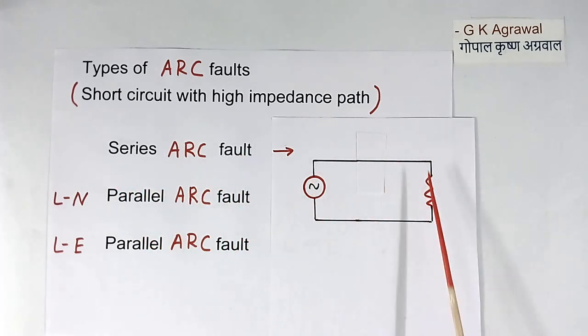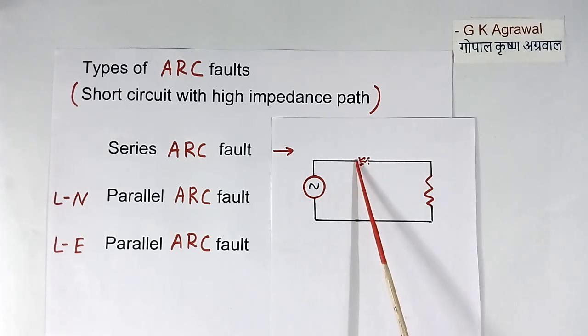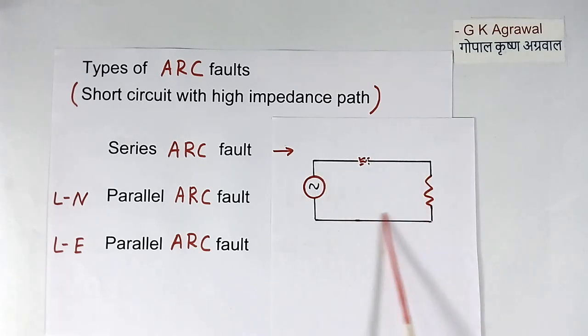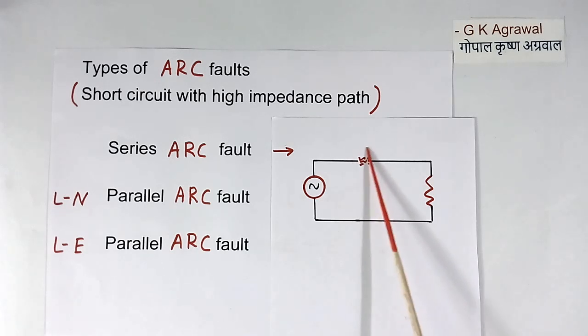This is simple circuit. This is load. Current is flowing, so no problem. Suppose in this wire, there is a crack like this. So here, arcing or sparking will take place. This current still will flow, but because of arcing, there will be fire. So this kind of problem is called the series arc fault.